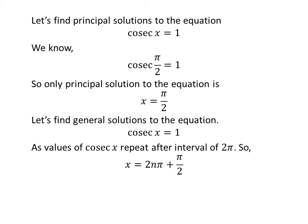Let us find the general solutions for the equation cosecant of x equals 1. As we know, the values of cosecant of x repeat after the interval of 2π, so the general solution is 2nπ plus π/2 where n is an integer. Further simplification gives us the general solution as (4n + 1)π/2.